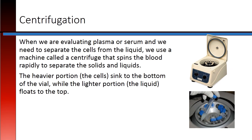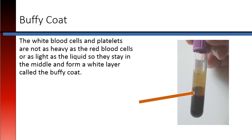When we need to separate the cells from the liquid, we use a machine called a centrifuge that spins the blood rapidly. The heavier portion, or the cells, will sink to the bottom of the vial, while the lighter portion, or the liquid, will float to the top. The white blood cells and platelets are not as heavy as the red blood cells or as light as the liquid, so they stay in the middle and form a white layer called a buffy coat.